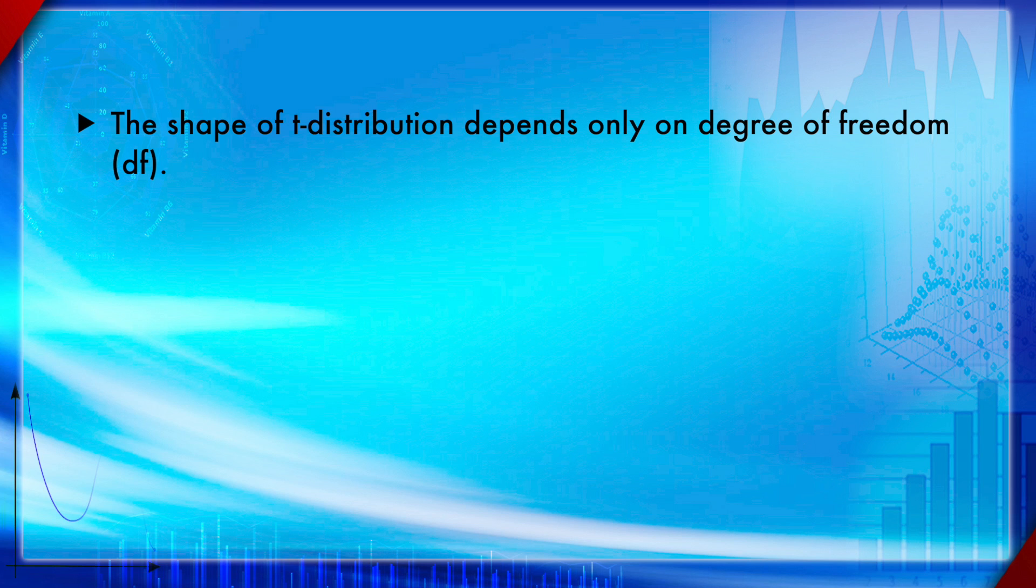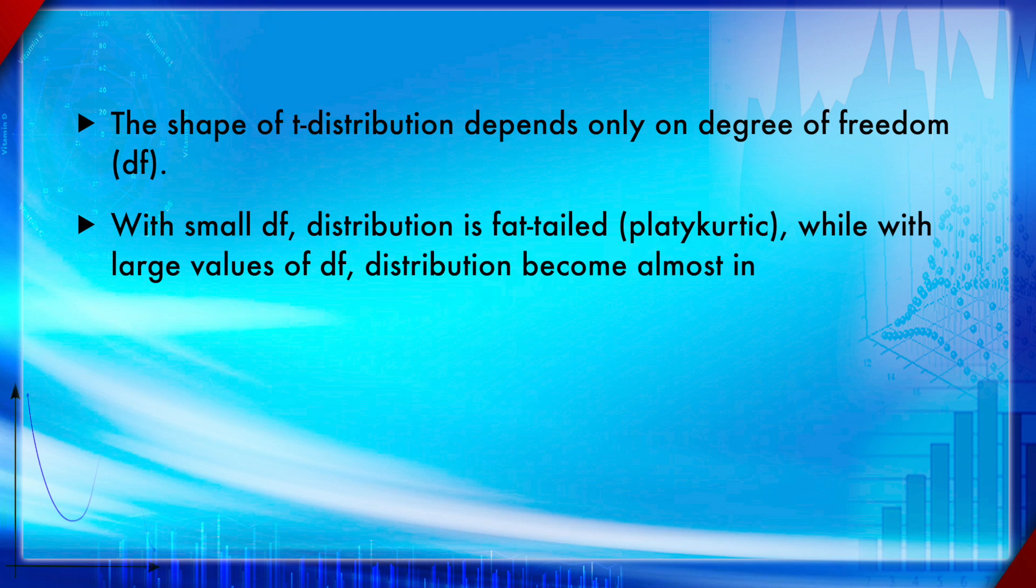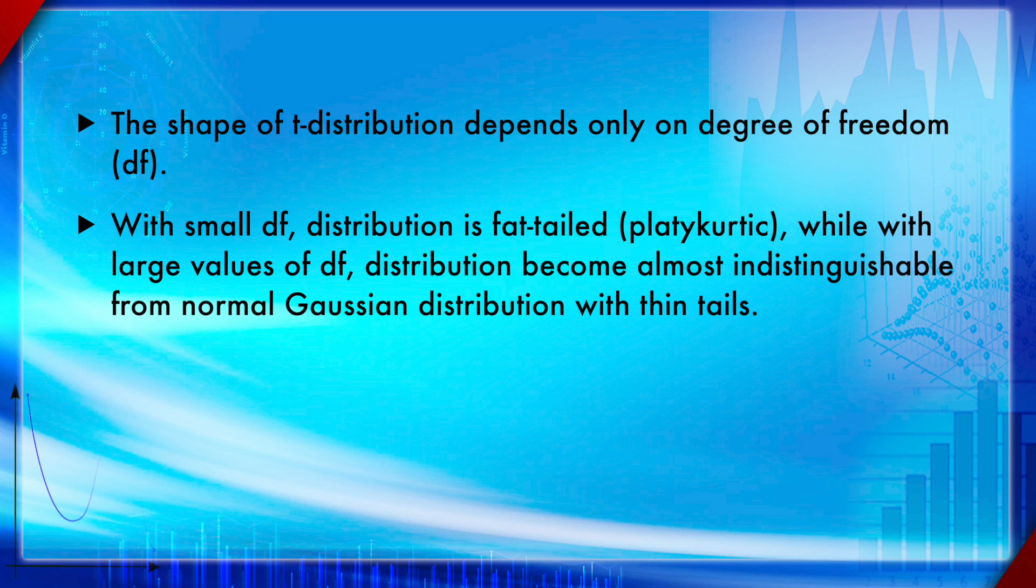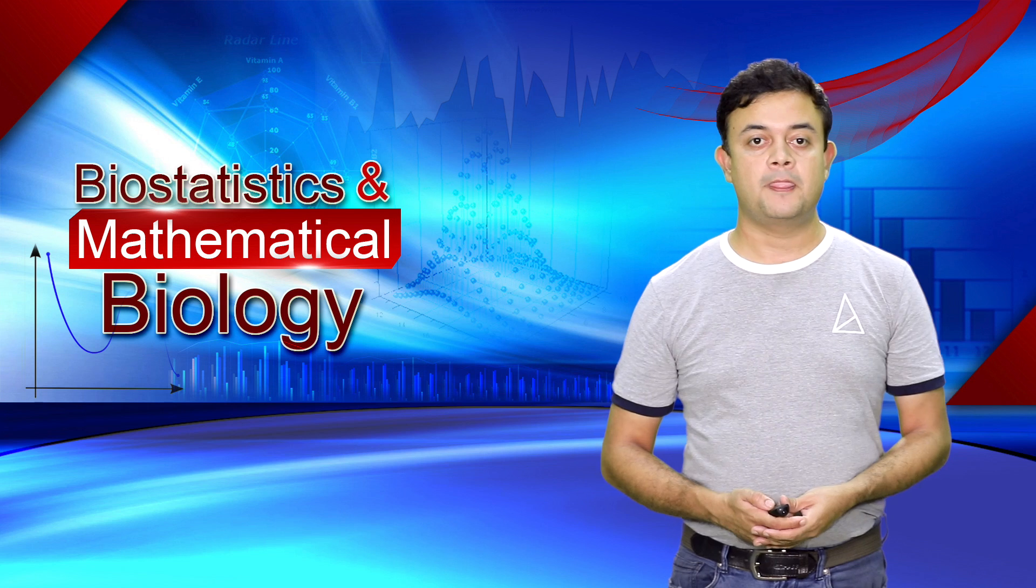The shape of t-distribution depends only on the degree of freedom, or df. That is what in this diagram you can see as ν. With small degree of freedom, the distribution is fat-tailed or platykurtic, while with large values of degree of freedom it becomes more peaked. You might remember the terms we introduced earlier: leptokurtic, mesokurtic, and platykurtic. This kurtosis depends upon the degree of freedom in the student's t-distribution.